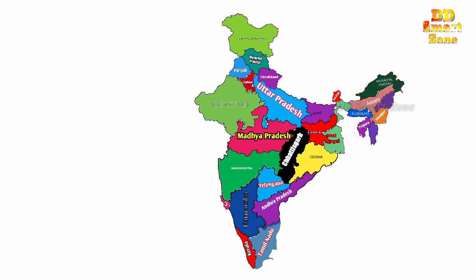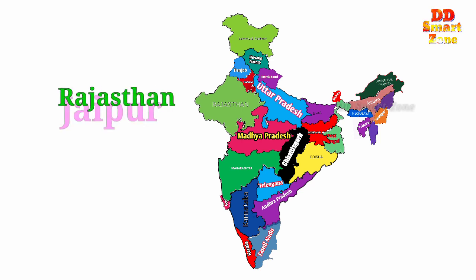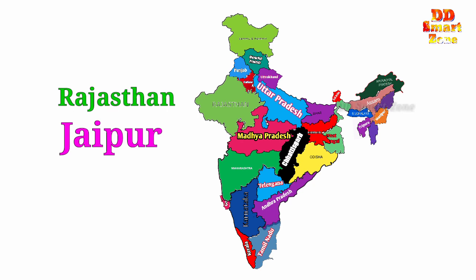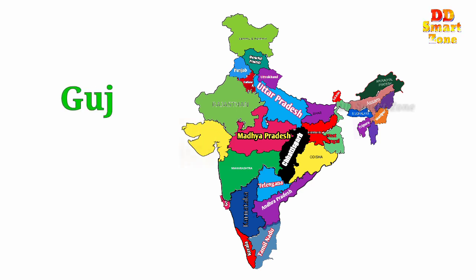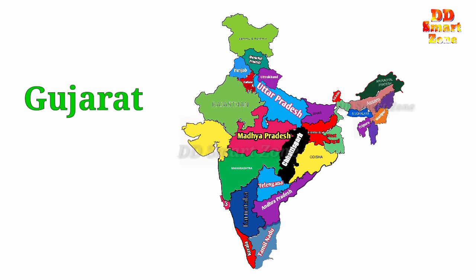State name Rajasthan, capital Jaipur. State name Gujarat, capital Gandhinagar.